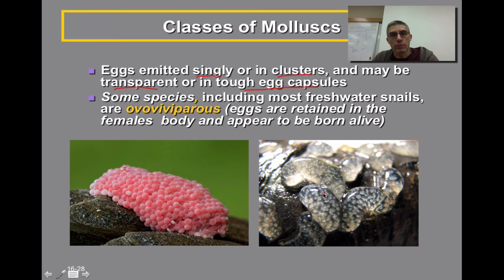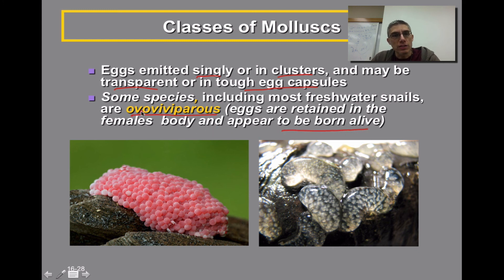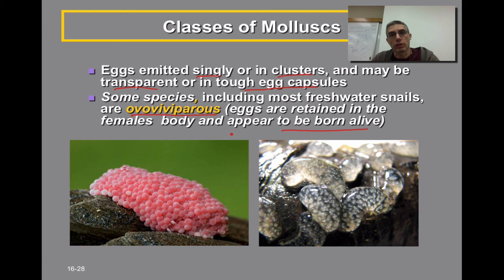There's lots of variety when it comes to how eggs are produced in gastropods. Some species, including most freshwater snails, are considered ovoviviparous. This means the eggs are retained in the female's body and they seem like they're being born alive. Since we have the prefix 'ovo' in front of 'viviparous,' the eggs actually hatch within the animal's body and are then released. It's not a system where the animal provides nutrition to the young — it simply protects them until they hatch and are released into the environment.